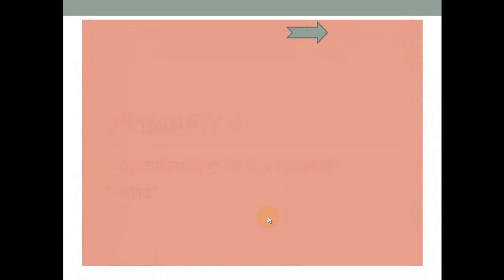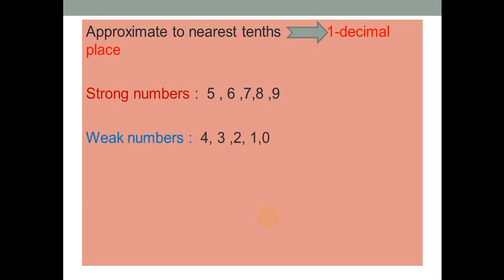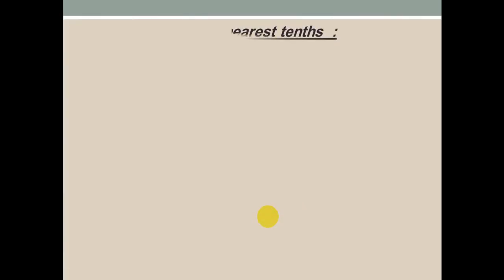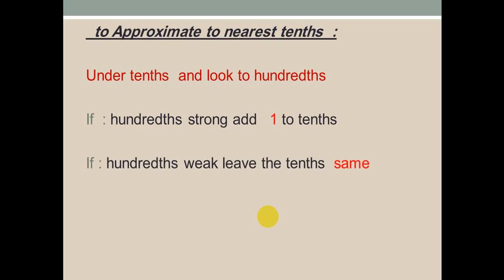Good morning. Our lesson today is about approximating to the nearest tenths. Approximating to the nearest tenths means first decimal place. Strong numbers are five and more — add one. Strong numbers: five, six, seven, eight, nine. Weak numbers: four and less — leave it. Weak numbers: four, three, two, one, zero. To approximate to the nearest tenths, underline the tenths and look to the hundredths. If the hundredths digit is strong, add one to the tenths place. If the hundredths digit is weak, leave the tenths the same.